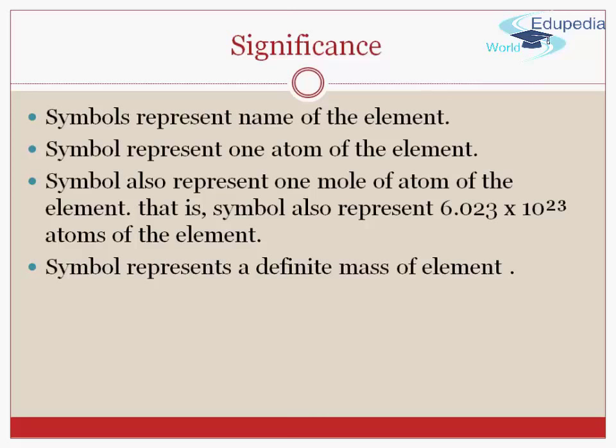Plus, the symbol represents a definite mass of element. That is, symbol C represents 12 grams of carbon, which is equal to the atomic mass of the carbon expressed in grams. So I hope now you have learned about the significance, the uniqueness of the symbols and the importance of the symbols.